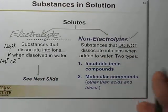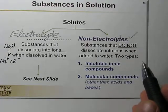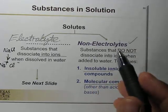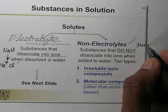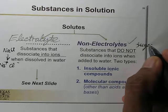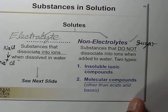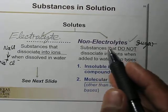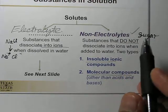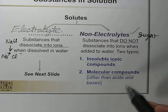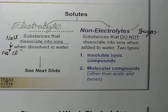Non-electrolytes are substances that do not dissociate into ions when added into water. For example, sugar or glucose molecules remain in molecular form — they do not dissociate. Non-electrolytes can be insoluble ionic compounds or molecular compounds, such as sugar and glucose, but not acids or bases.